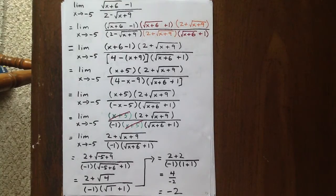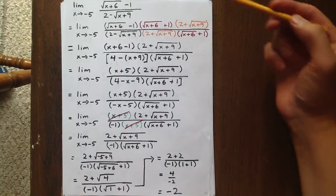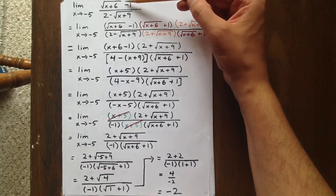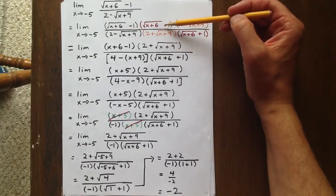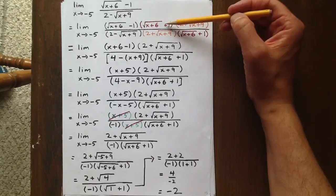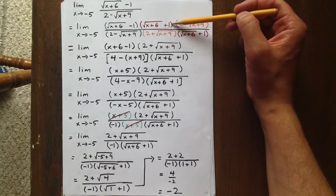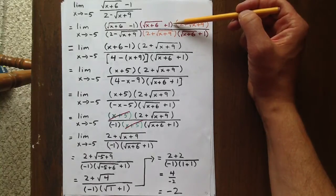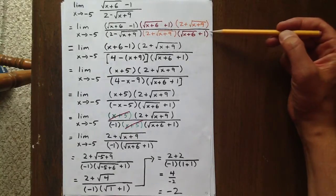We don't want that, so what we're going to do is try to rationalize the numerator and the denominator. The way to rationalize the numerator is to multiply by the conjugate of the square root of x plus 6 minus 1, and that is the square root of x plus 6 plus 1 as shown in red. But if we introduce that factor to the numerator, we need to introduce it to the denominator as well.